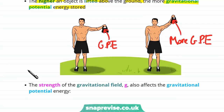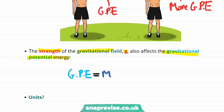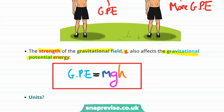The strength of the gravitational field, G, also affects the gravitational potential energy. The stronger the Earth's gravity, the harder it would be to lift something up. This brings us to a formula for the gravitational potential energy: it is equal to the mass of the object multiplied by the gravitational field strength, multiplied by the height that it has been lifted.